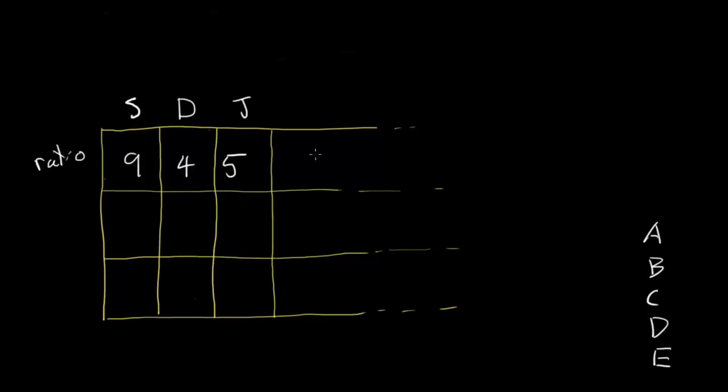This row up here represents the ratio world, and then this bottom row is the real world, where the actual values are, the actual number of shirts and number of dresses and so on. And to get from the ratio world to the real world, we need a multiplier. So if our multiplier were 10, say, then we'd have 90 shirts and 40 dresses and 50 jackets.